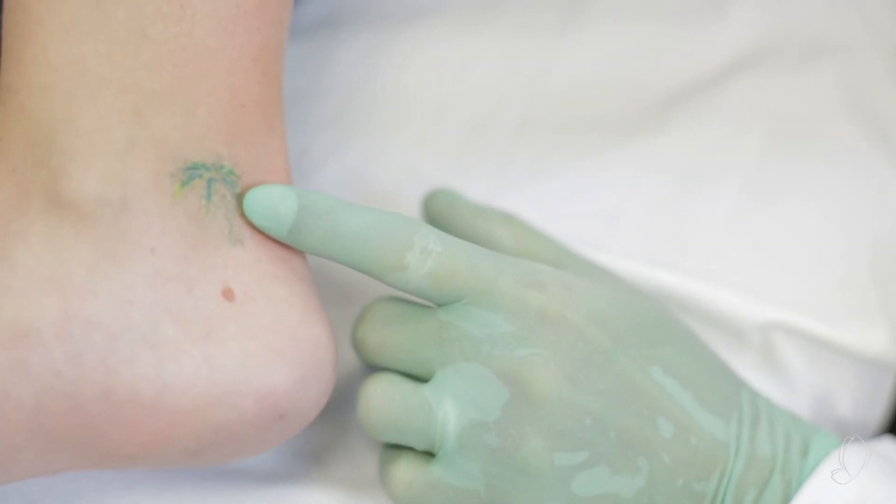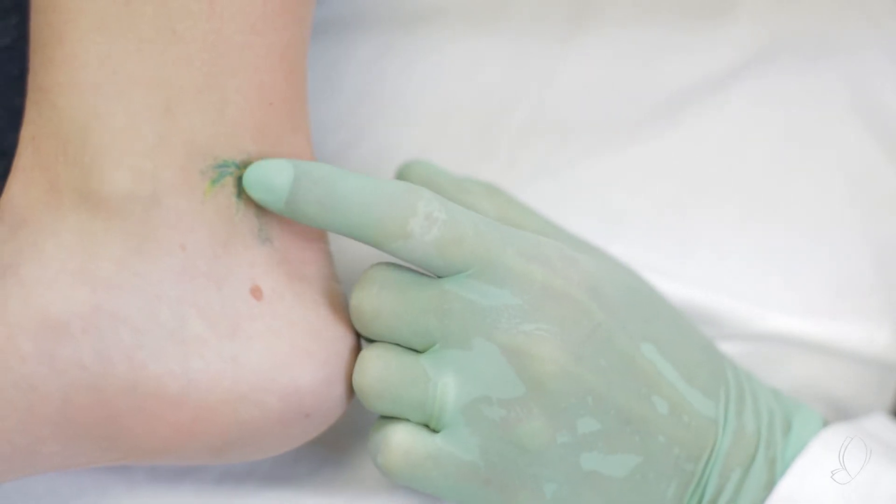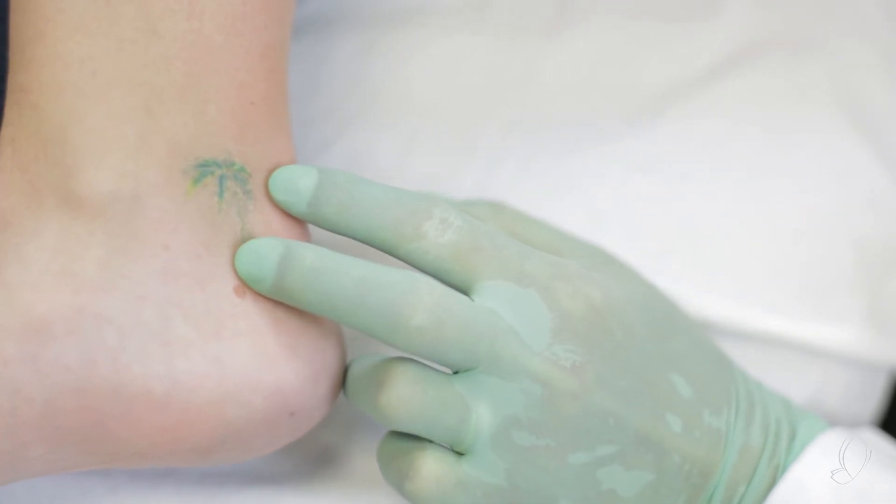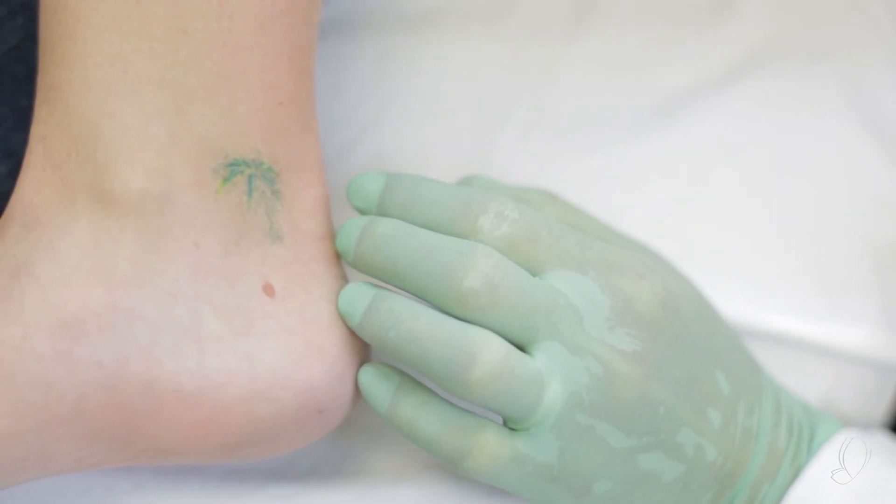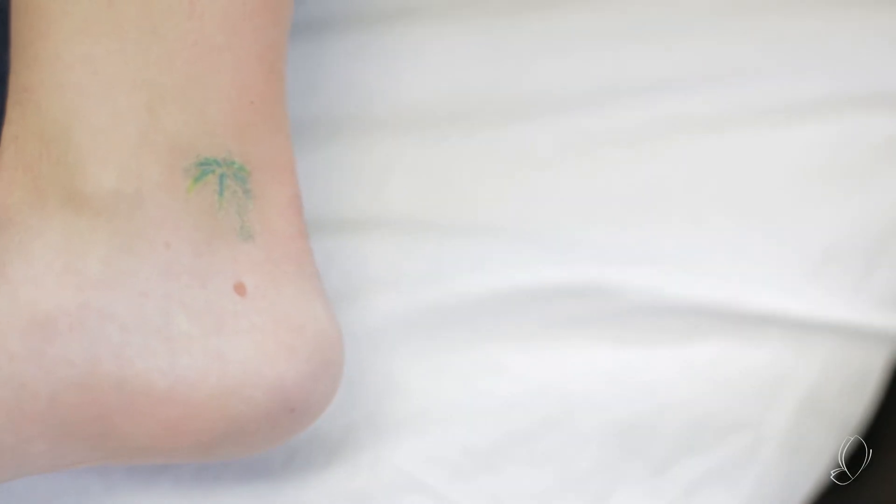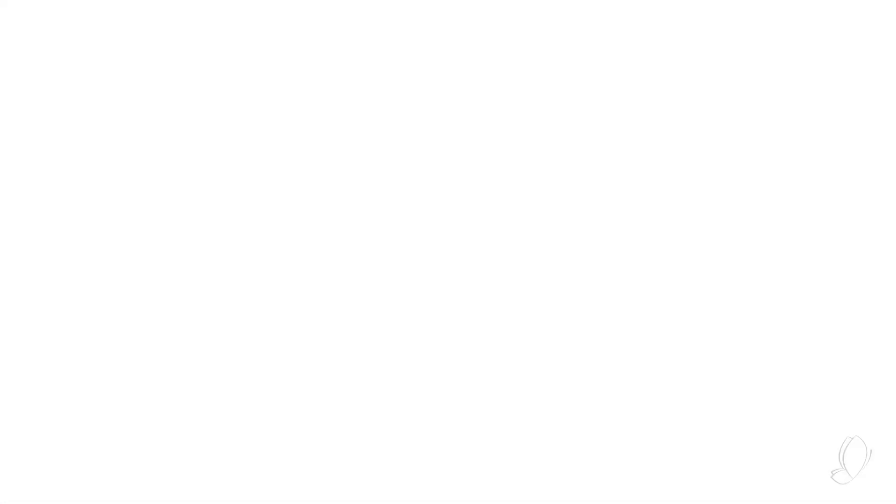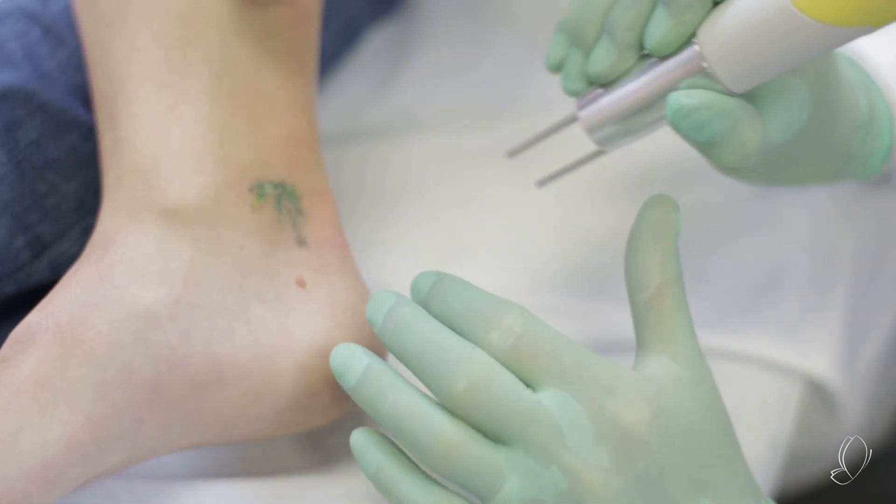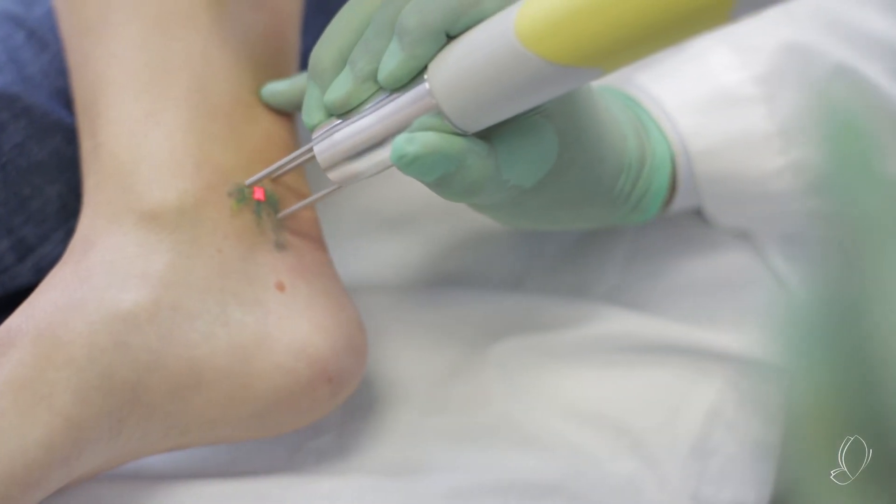Now what I could do is I could go back to our 694 wavelength, the Ruby wavelength, and specifically get some of those green spots. Again, because we didn't over-treat at this point in time, I'm probably comfortable doing that. Are you all right to take a few more spots? Okay. We're going to go back and just hit some of these green areas here with the 694. Three, two, one.